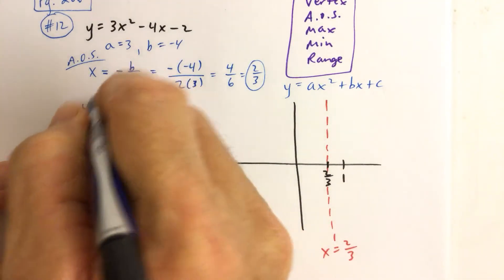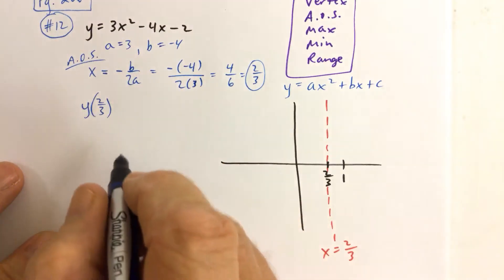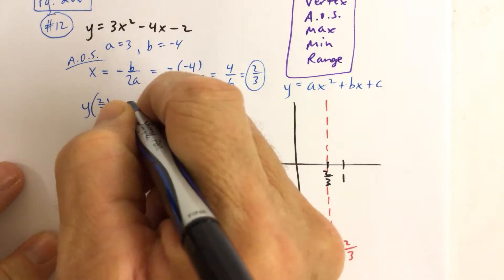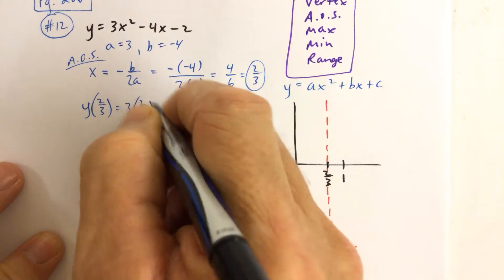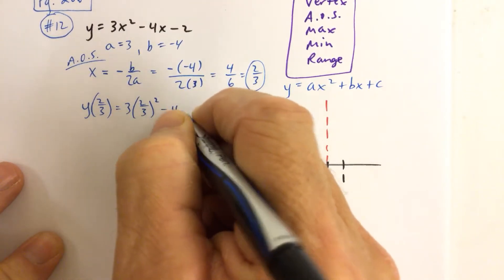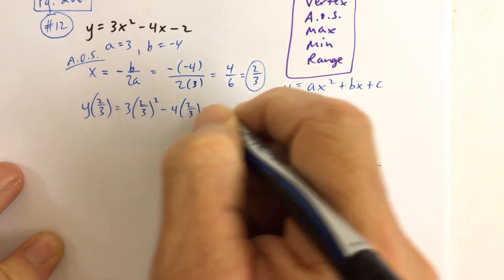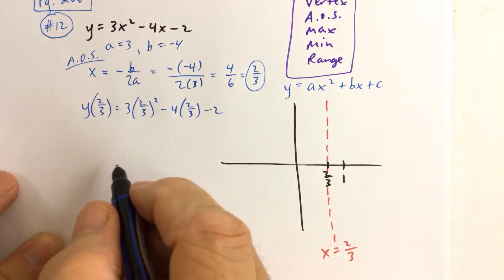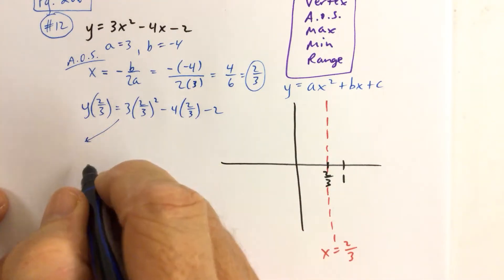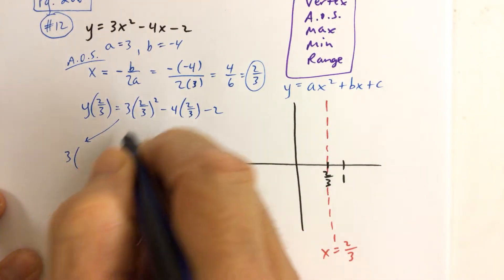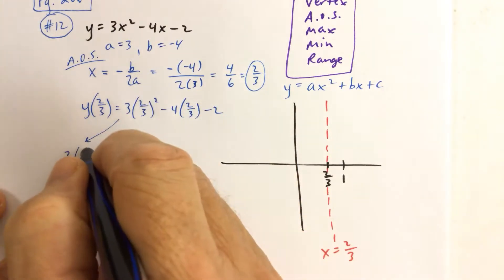But in order to do that, we have to plug in 2 thirds for x. So we have 3 times 2 thirds squared minus 4 times 2 thirds minus 2. Let's move it over here a little bit. 3 times 2 thirds squared, so you have to square the 2 thirds first.